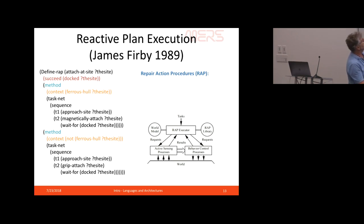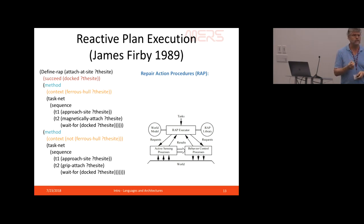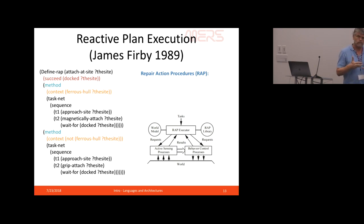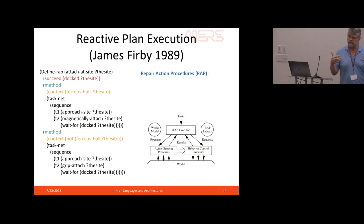RAPS has two methods applied in different contexts based on applicability conditions — for example, one method if the hole is ferrous, another if it's not. Normally programs are open-loop and never specify what conditions the world should satisfy. RAPS adds a declarative specification of what it expects about the world and offers multiple methods with a decision-making algorithm deciding what to do. These two ideas — goal-directed state checking and non-deterministic choice of method — will be leveraged quite a bit today.